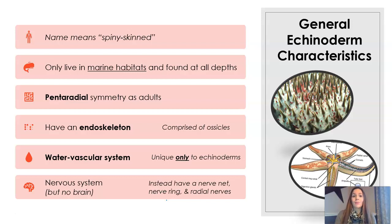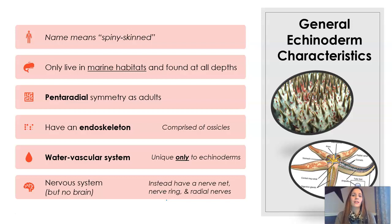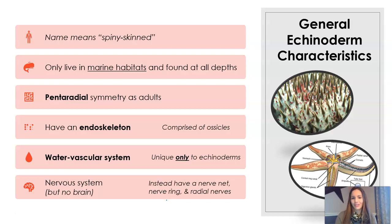The name itself means spiny skinned, and they only live in marine habitats — so there are no freshwater echinoderms — but they are found at all depths, even very deep on the ocean floor. They have something called pentaradial symmetry, which is new to us because they have things arranged in fives. They also have an endoskeleton, comprised of ossicles. They also have something called a water vascular system that is unique to only them.